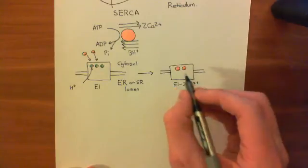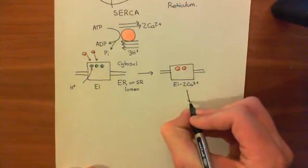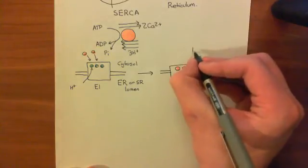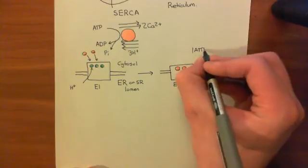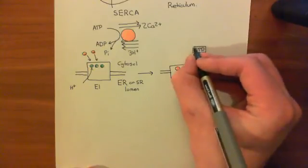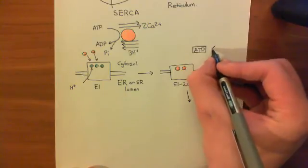So E1 with two calciums, and now what happens is that an ATP molecule needs to come along. I'll label it here, but let's give it its actual structure. So here's ATP. Here's the ribosugar. Here's the adenine organic base coming off. And then we've got three phosphate groups, adenosine triphosphate.